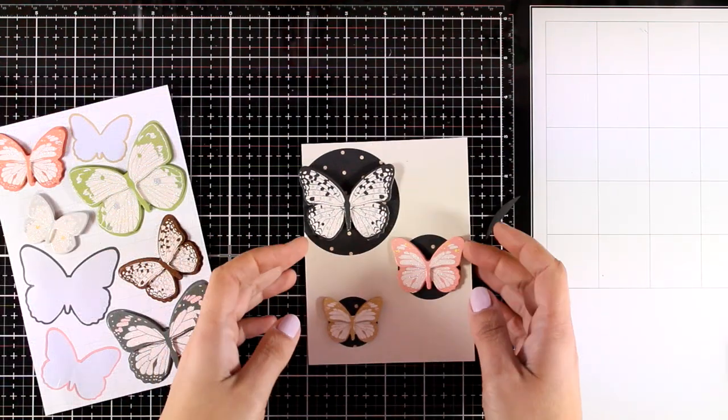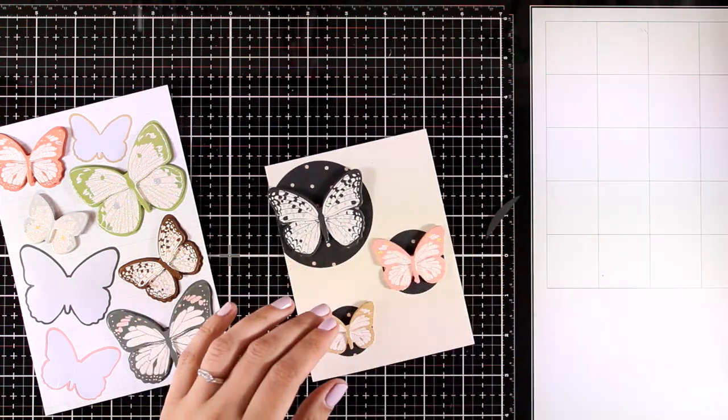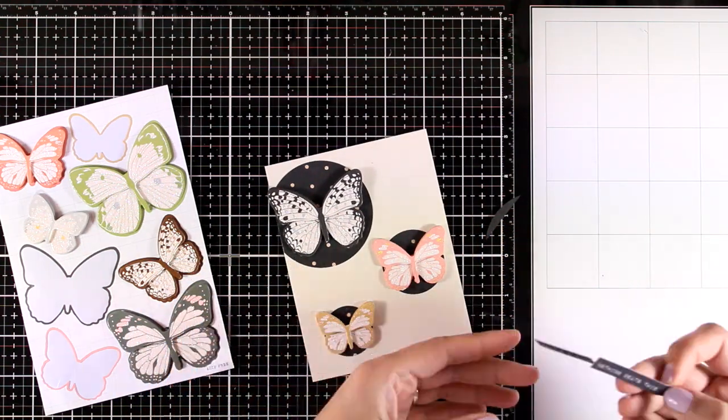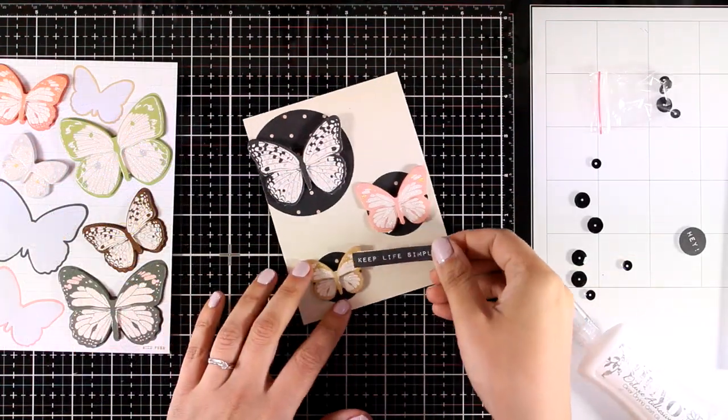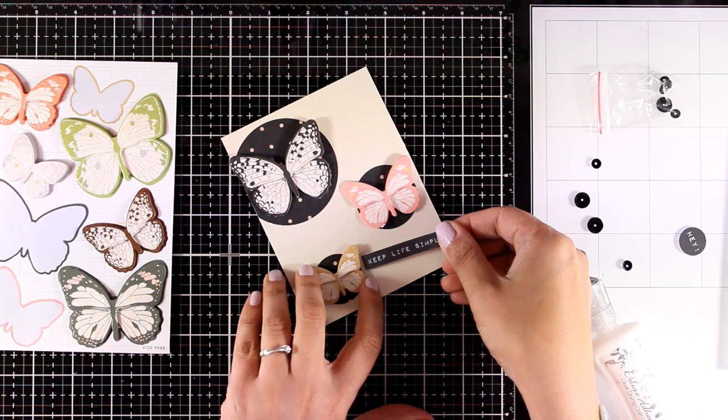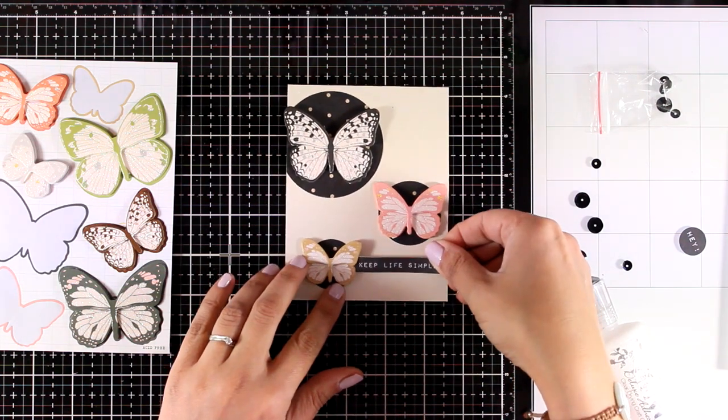And when I cut out my circles, I made sure that they were in different sizes just for some variation and interest on my card. From the die-cut shapes, I picked one sentiment that says keep life simple, which I'm going to stick with foam tape.